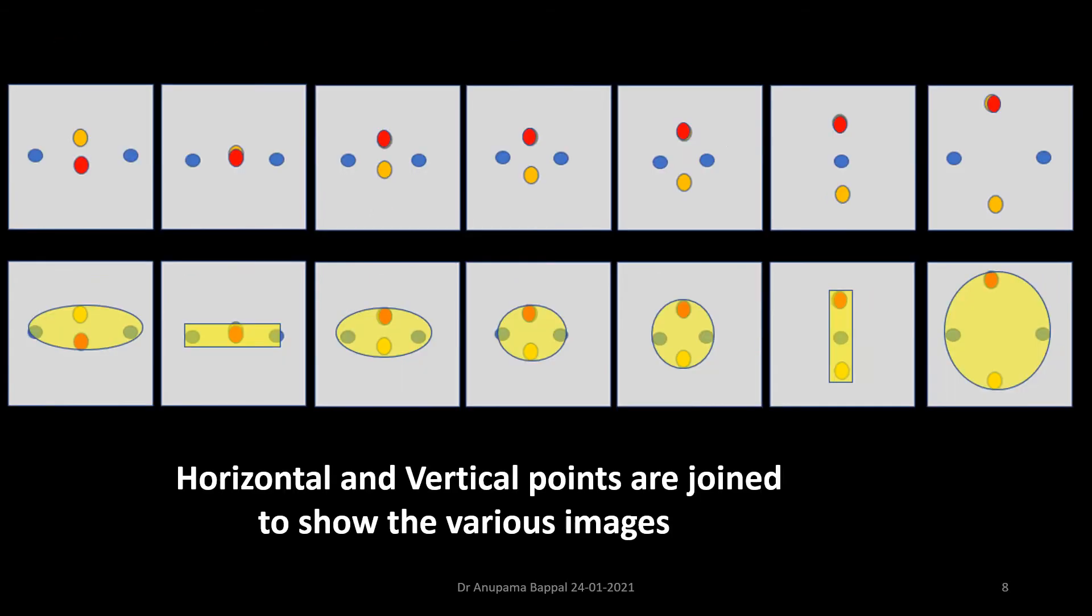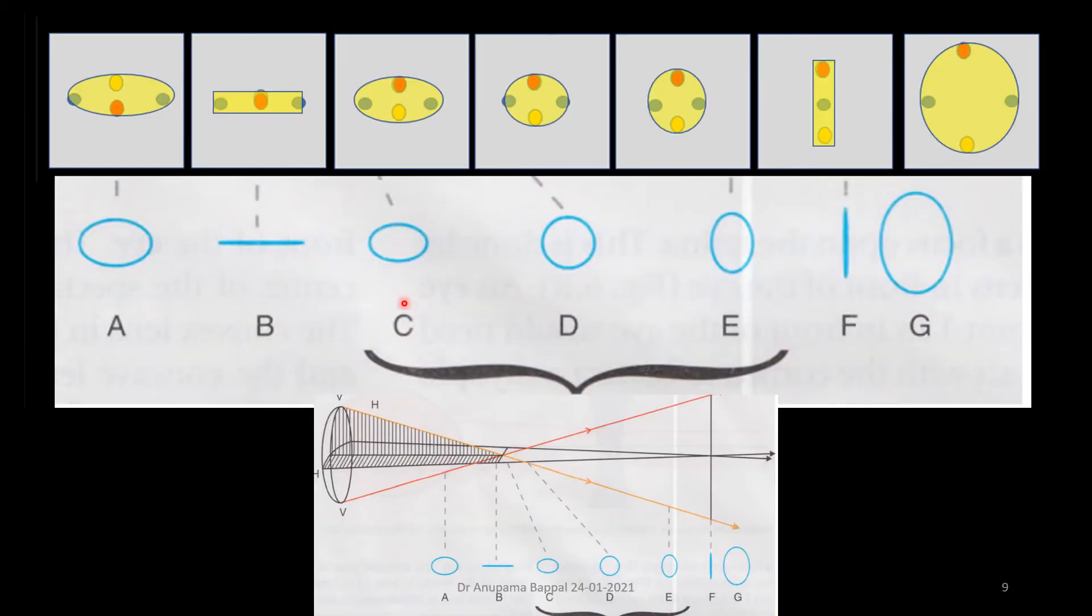So let's see how we can create an image. Now what I've done is I have joined the horizontal and the vertical dots to get various images. And these images that we have got now closely match the images that are seen in Sturm's conoid. So at section A, this is how the image would look like. It is horizontally oval.